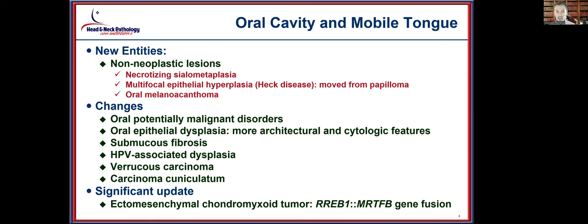The new entities for this edition are actually the non-neoplastic ones. Tumor-like lesions or reactions include necrotizing sialometaplasia, multifocal epithelial hyperplasia or Heck's disease, and oral melanoacanthoma — all lesions that can simulate neoplasms and were included for completeness. There have also been changes in the oral potentially malignant disorders and oral epithelial dysplasia entities, specifically relating to architecture and cytology.